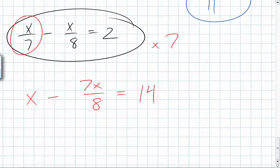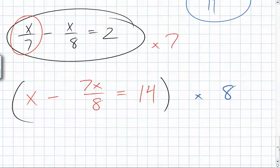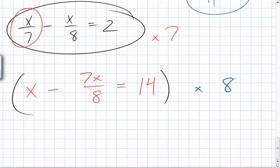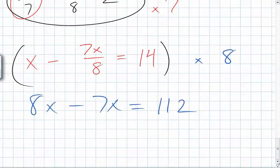I'm now going to multiply everything by what number? Eight. What's eight times x? What happens to seven x over eight if I multiply it by eight? What's eight times 14? I'll help you. What's eight times 10? What's eight times four? 32. What's 32 plus 80? You just did multiplication. Good. What's eight x minus seven x?